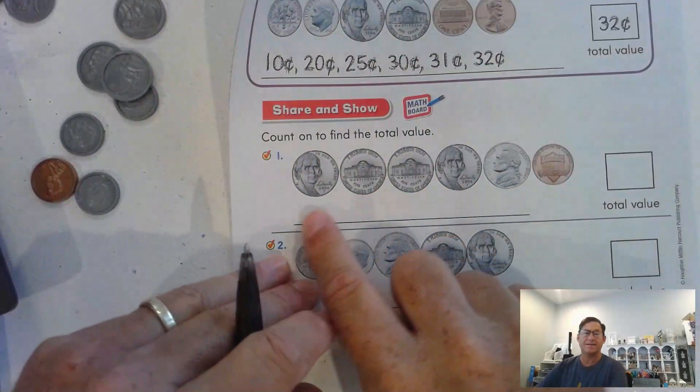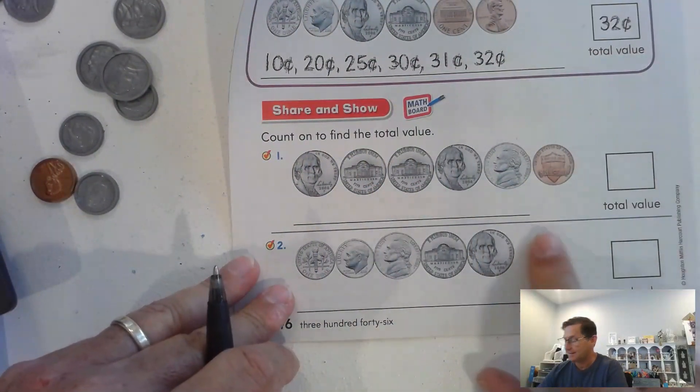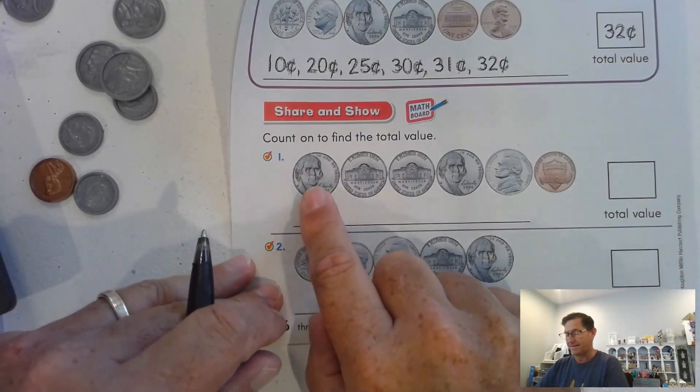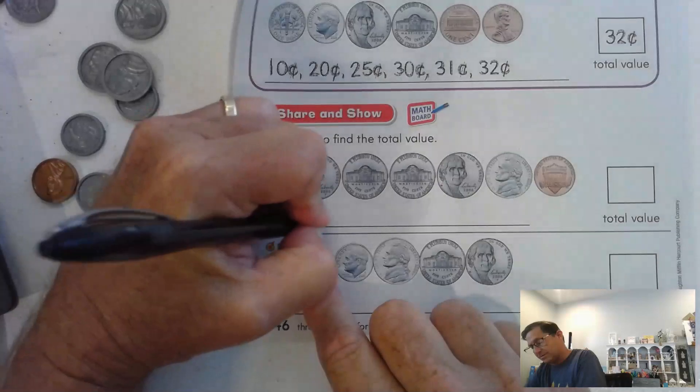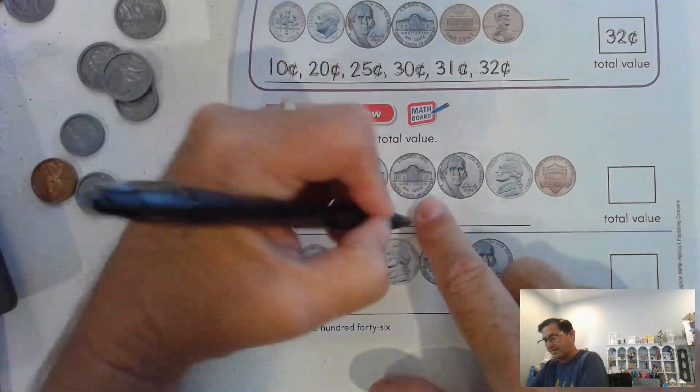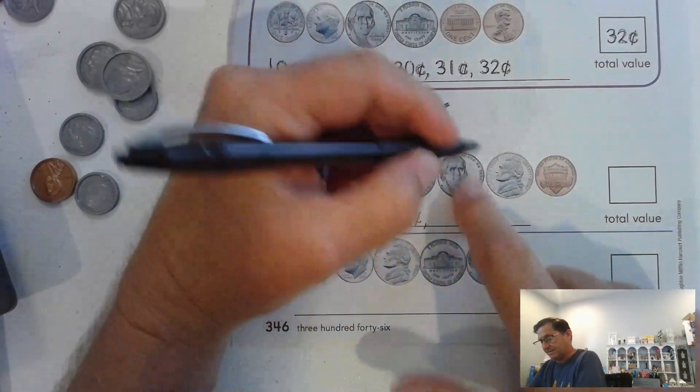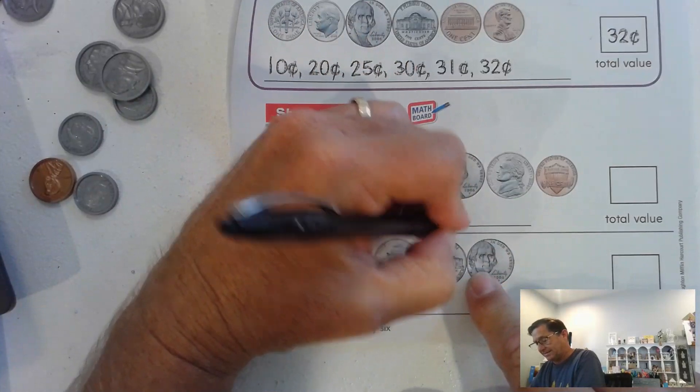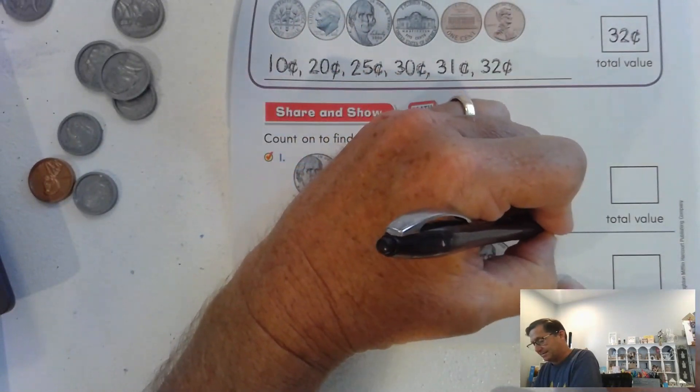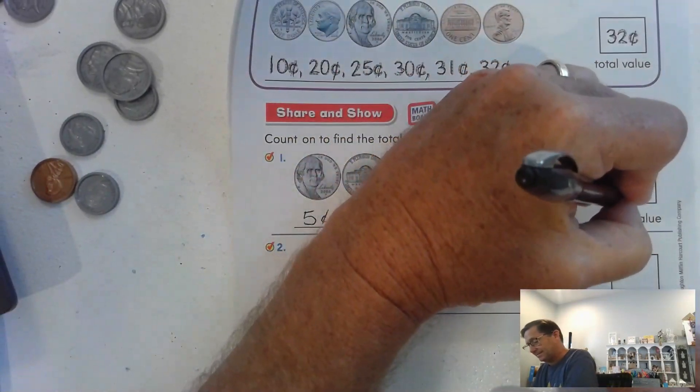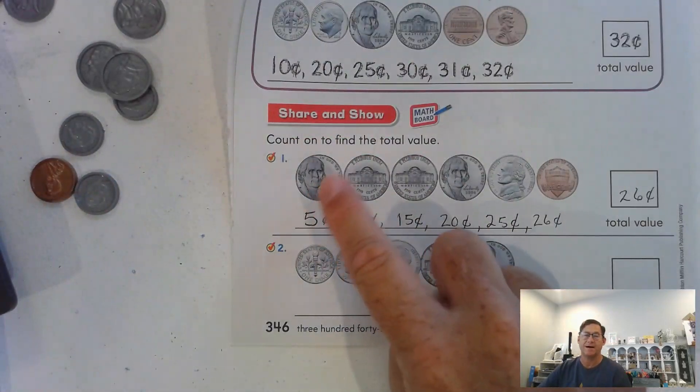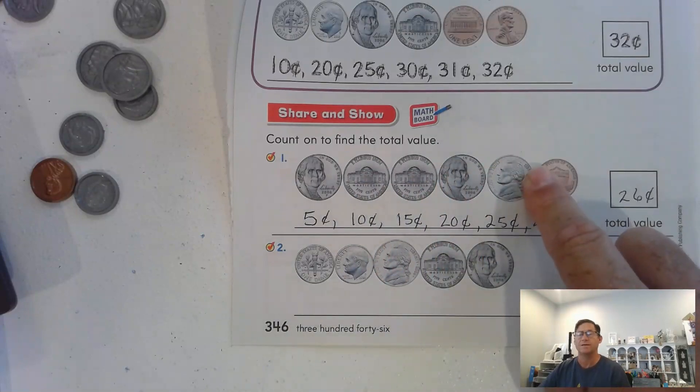Count on to find the value. We have all nickels and a penny. So we have five cents, 10 cents, 15 cents, 20 cents, 25 cents, 26 cents. The value of these coins is 26 cents: 5, 10, 15, 20, 25, 26.